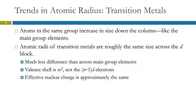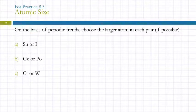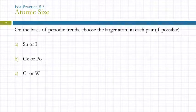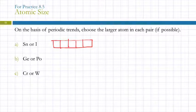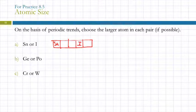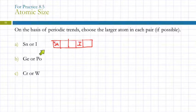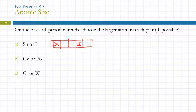We should be able to answer questions like: choose the larger atom in each pair. Tin or iodine — looking at the periodic table, tin and iodine are in the same period. As we go across from left to right, atomic radius gets smaller. So tin, being to the left of iodine, is the larger atom.